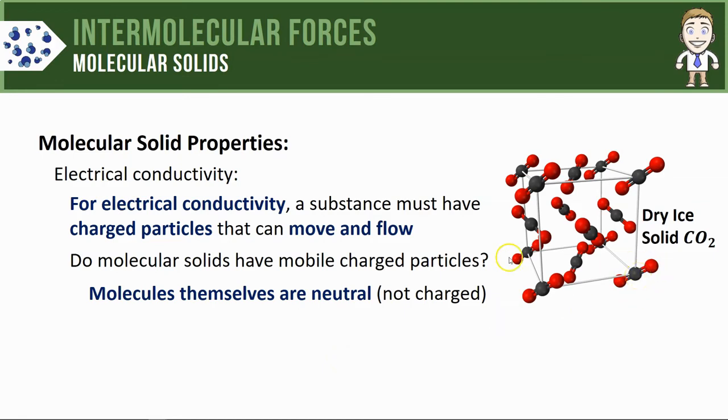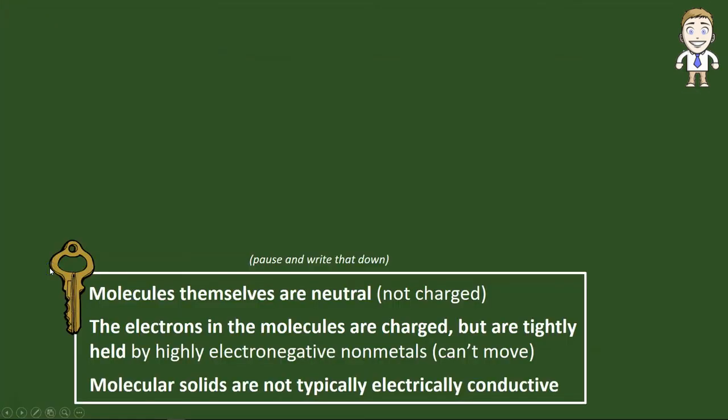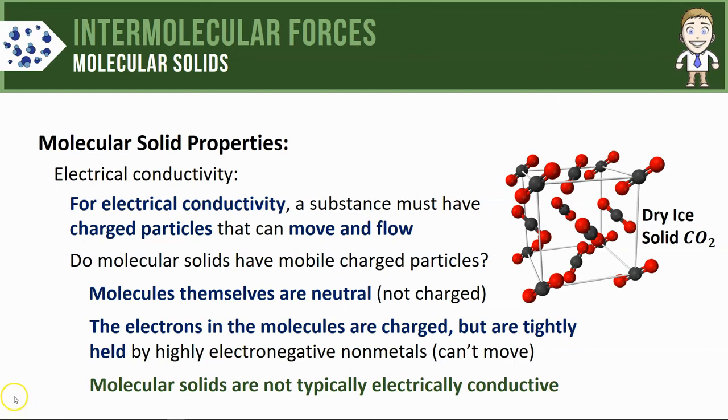So let's start with the molecules themselves. CO2, or any molecule for that matter, by definition is neutral—that means it does not have a charge. Now there are electrons in these molecules that do have a charge, but because they're molecules made of non-metals, those electrons are very tightly held, which means they can't move around. For this reason, molecular solids are not typically electrically conductive. This is our final key idea for the video.